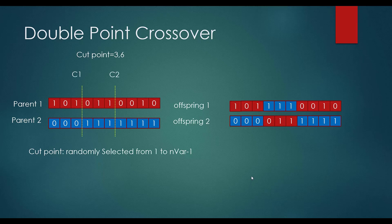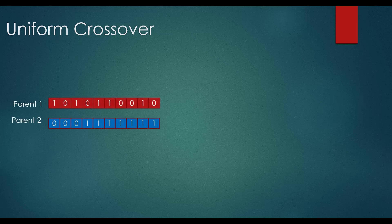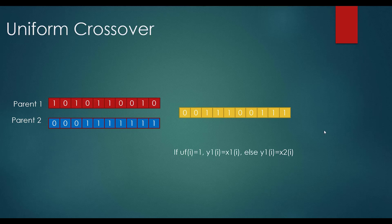We also have a uniform crossover, which is different from single point and double point crossover. For uniform crossover, we have two parents and we generate a uniform random vector UF. If UF[i] equals one, then y1 equals x1; if UF[i] equals zero, y1 equals x2.